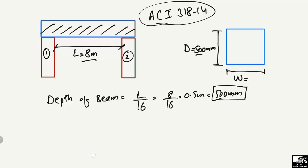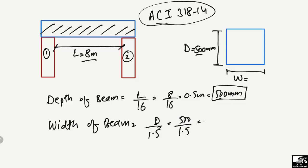Similarly, the minimum width of the beam according to ACI is equal to D divided by 1.5, where D is the minimum depth. Since D is 500 millimeters, 500 divided by 1.5 gives 333.33 millimeters — so 333 millimeters is the minimum width for this simply supported beam.